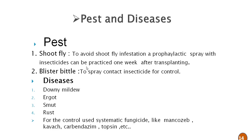Diseases of pearl millet include downy mildew, ergot, smut, and rust. For control of these diseases, systemic fungicides like mancozeb, carbendazim (bavistin) and many more are recommended.